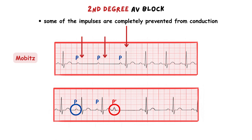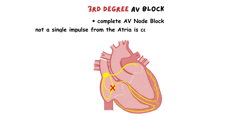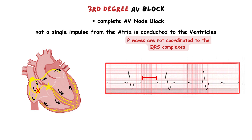Next we have the third degree block, which represents a complete AV node block when not a single impulse from the atria is conducted to the ventricles. Because of that we have completely independent atrial and ventricular depolarization, and the P waves are not going to be coordinated with the QRS complexes. The atria are paced by the SA node, so on the ECG we have a normal-looking P wave, and if you measure the rate using PP intervals, you will detect that the rate of the P waves is in the 60 to 100 beats per minute range.